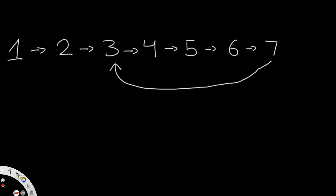How do we identify such a cycle? We're going to have two pointers — you might also know this as the rabbit and the tortoise method. One of them is going to be the slow pointer and the other is the fast pointer, denoted as S and F. Both of these pointers are going to start off at the head node, which in this case is one. The fast pointer moves two steps for every one step the slow pointer takes.